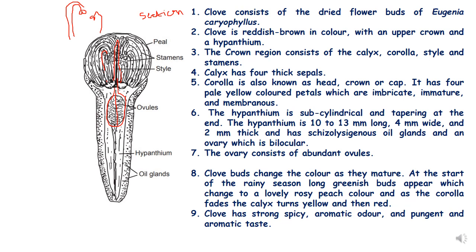When you take the clove in your hands, even without a hand lens you can make out that clove consists of dried flower buds of Eugenia caryophyllus. Clove is nothing but a dried, unopened flower bud. It is reddish brown in color with an upper crown and a hypanthium.